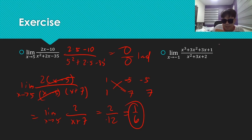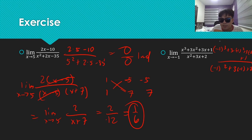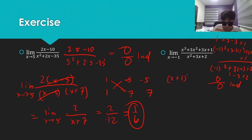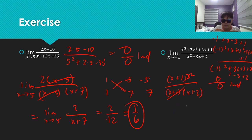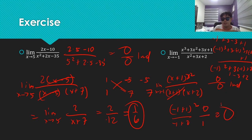How about this one? Let's substitute negative 1: negative 1 cubed plus 3 times negative 1 squared plus 3 times negative 1 plus 1 over negative 1 squared plus 3 times negative 1 plus 2. The numerator gives 0, and the denominator gives 1 minus 3 plus 2, which is also 0. Indeterminate form — we need more work. The top is actually x plus 1 cubed. The bottom factors as x plus 1 times x plus 2. Cancel one x plus 1, leaving x plus 1 squared over x plus 2. Evaluating the limit as x goes to negative 1: negative 1 plus 1 squared over negative 1 plus 2 equals 0 over 1, which is 0. That is the actual limit.